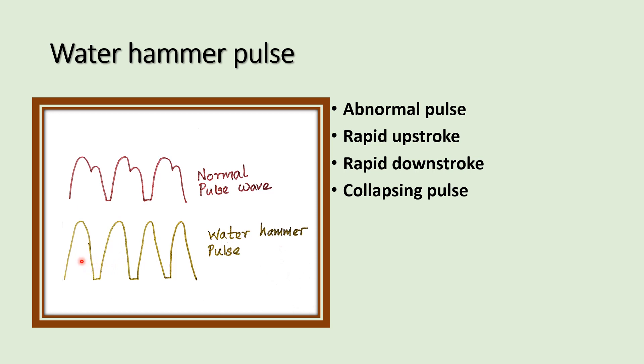The water hammer pulse is otherwise called the collapsing pulse. Normally when you feel the pulse it is forceful and bounding, but when you raise the patient's arm above the level of the chest, the pulse disappears — that is called the collapsing pulse. It is otherwise called the Corrigan's pulse, named after the scientist Dominic Corrigan. It is normally seen in aortic regurgitation; aortic valve incompetence produces the water hammer pulse.